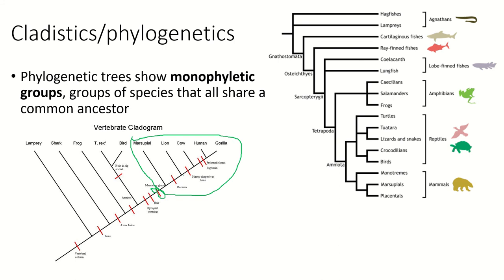The lion has a placenta, but it doesn't have a stirrup-shaped ear bone. The cow, the human, and the gorilla all have a stirrup-shaped ear bone. The big brain develops further along the tree — humans, gorillas, and chimpanzees have relatively large brains, although the human brain is much larger. The prehensile hand that can grab things is also a trait shared by humans and gorillas.